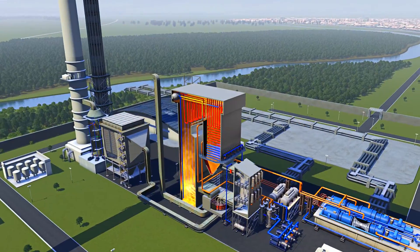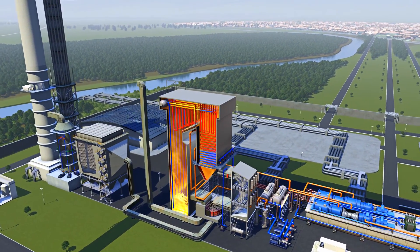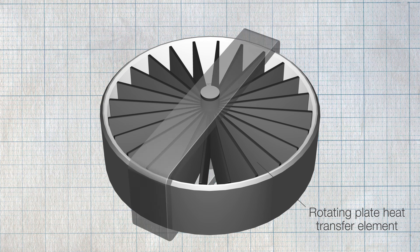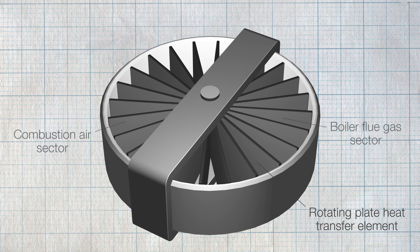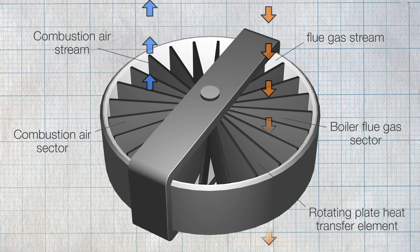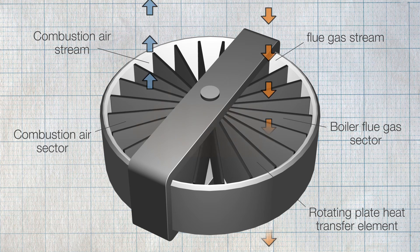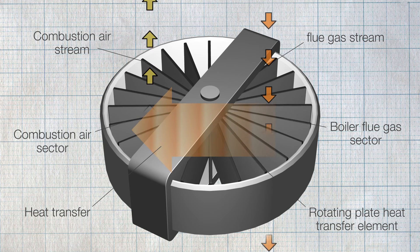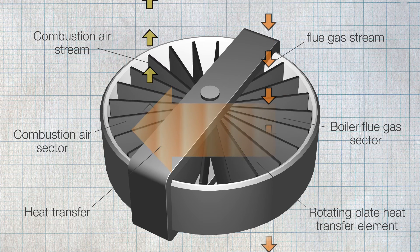Rotating plate air preheaters are commonly installed in many power stations. They comprise of a rotating plate, heat transfer element and between 2 to 4 sectors, which are used to recover heat from the boiler flue gas. The heat transfer section of the preheater rotates at up to 3 RPM, collecting heat from the flue gas stream and releasing it to the boiler air stream.